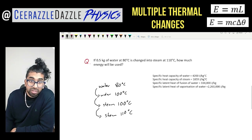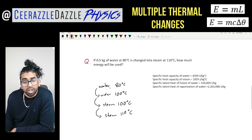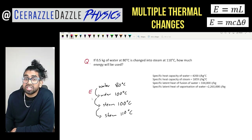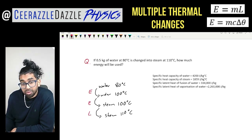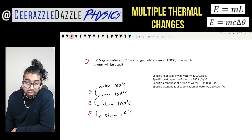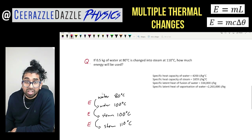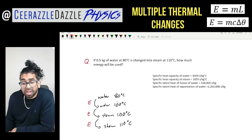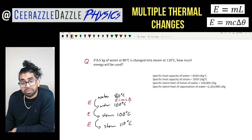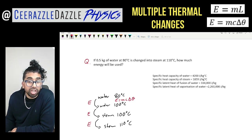So the first thing to do is identify the steps. We need some energy for each of the three processes, and the total energy required is the addition of all three energies. For the first stage we use the specific heat capacity equation: energy equals mass times specific heat capacity times temperature change, because we are changing temperature here.